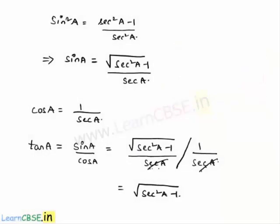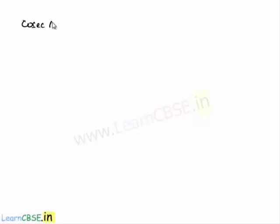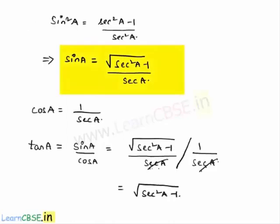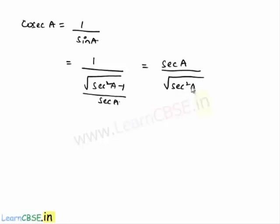Finally, let us express cosec a in terms of sec a. Since cosec a = 1/sin a, and sin a = √(sec²a - 1)/sec a, we get cosec a = sec a / √(sec²a - 1).